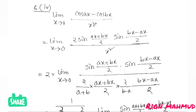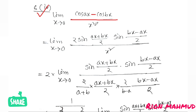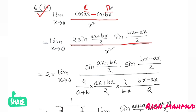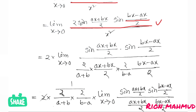Now the fourth question: limit x tends to 0 of (cosbx minus cosx) divided by x squared. We apply the cos C minus cos D formula: cosbx minus cosx equals 2 sin((bx+x)/2) sin((x-bx)/2), which gives 2 sin((b+1)x/2) sin((1-b)x/2).